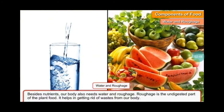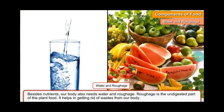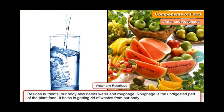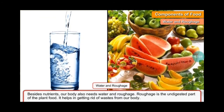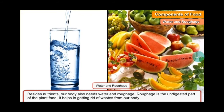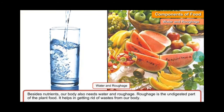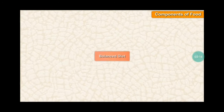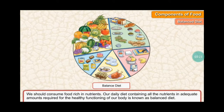Besides nutrients, our body also needs water and roughage. Roughage is the undigested part of plant food. It helps in getting rid of waste from our body. Fruits and vegetables are sources of roughage. Water also helps to get rid of waste from our body in the form of urine.